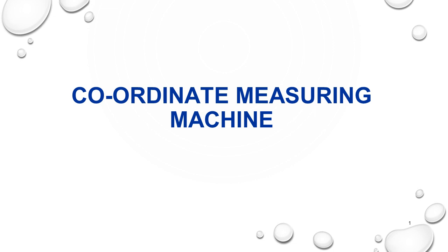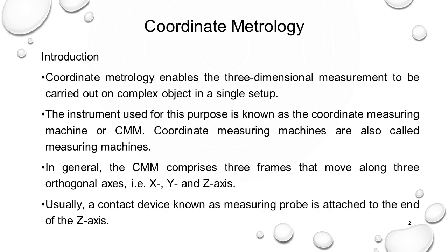Coordinate measuring machine has X, Y, and Z axes. It has a probe which records X, Y, and Z coordinates, fitted to a probe head. This probe has a home position that is 0, 0, 0. With respect to its home position, it moves to the product, automatically calculates the X, Y, and Z, makes contact with the part and takes the coordinate.